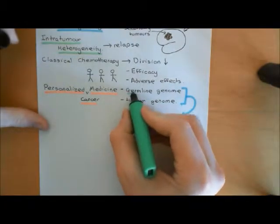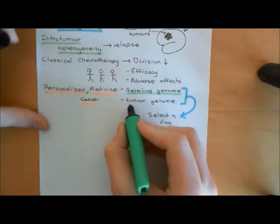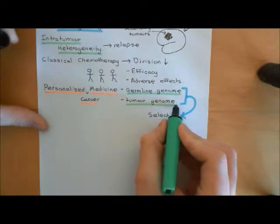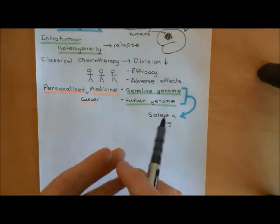It becomes slightly more complicated in the case of cancer because there is a difference between the germline genome and the tumour genome. So you have to look at both the germline genome and the tumour genome. Generally, in other aspects of personalised medicine, all you need to look at is the germline genome, but in cancer medicine you need to also look at the genome in the cancer cells.